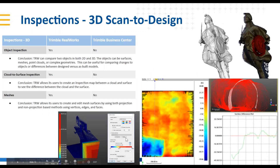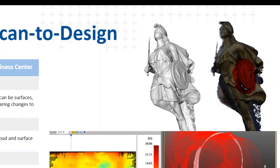Now let's move into the full 3D world with 3D scan-to-design inspections. This is where RealWorks has some really nice features and strong suits, where you can do object inspection, cloud-to-surface inspection, and support true 3D meshes. You can see in the upper right corner a mesh model of that statue — the front of the HMS Surprise ship, used in the movie Master and Commander.